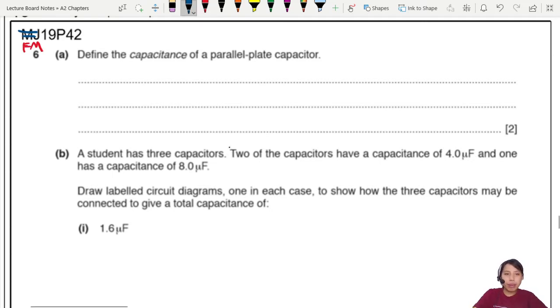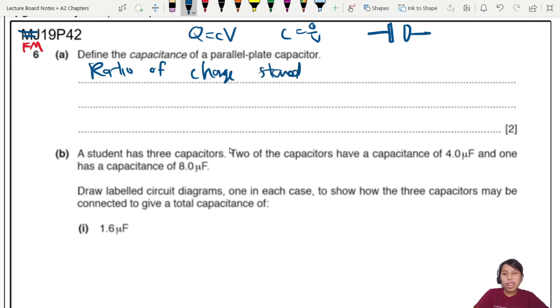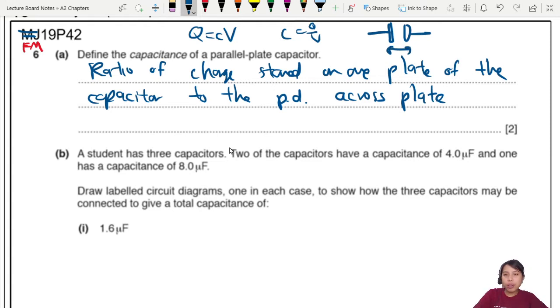Okay, define the capacitance of a parallel plate capacitor. By now, you should already know Q equals CV, C equals Q over V, but be specific. They want parallel plate capacitor. So you can say it's the ratio of charge stored on one plate of the capacitor to the PD across it. Potential difference is PD. I suggest you write out the whole thing. I'm just shortcutting here a little bit so I can write faster.